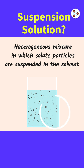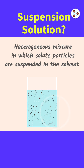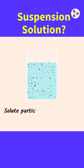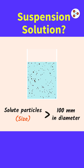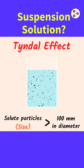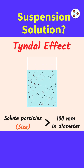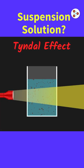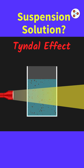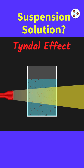We can visually distinguish between their components. The size of the solute particles is larger than 100 nm in diameter, and can lead to the Tyndall effect. Tyndall effect means the scattering of a beam of light by a medium containing suspended particles — in this case, the mud particles. The large size of the mud particles makes them visible through the naked eye.